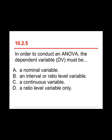Question five: in order to conduct an analysis of variance, the dependent variable must be — a) a nominal variable, b) an interval or ratio level variable, c) a continuous variable, or d) a ratio level variable only. The answer is b) an interval or ratio level variable. The predictor variable — or independent variable in an experiment — must be a categorical variable, so nominal or sometimes ordinal. A continuous variable is sometimes used to mean quantitative, but a quantitative variable can be discrete, like number of children. Ratio level only is incorrect because you can also calculate means and standard deviations for interval variables.